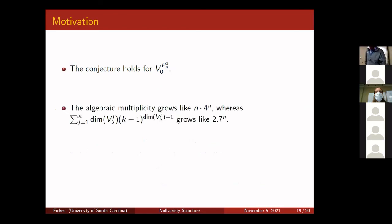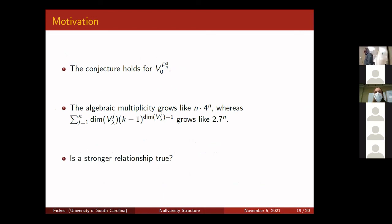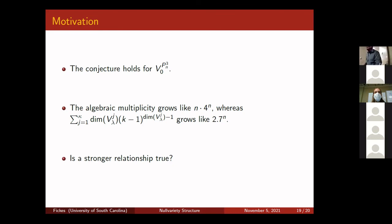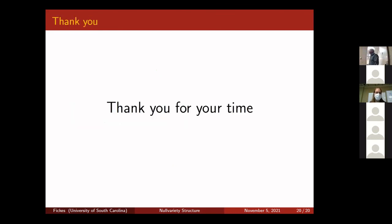So we know the structure of the null varieties for 3-uniform linear hyperpaths. It would be great to find decompositions for other classes of hypergraphs to gather more data about the conjecture — whether it's always true, false, or whether something stronger holds. That's all I have — thank you all for coming and listening.